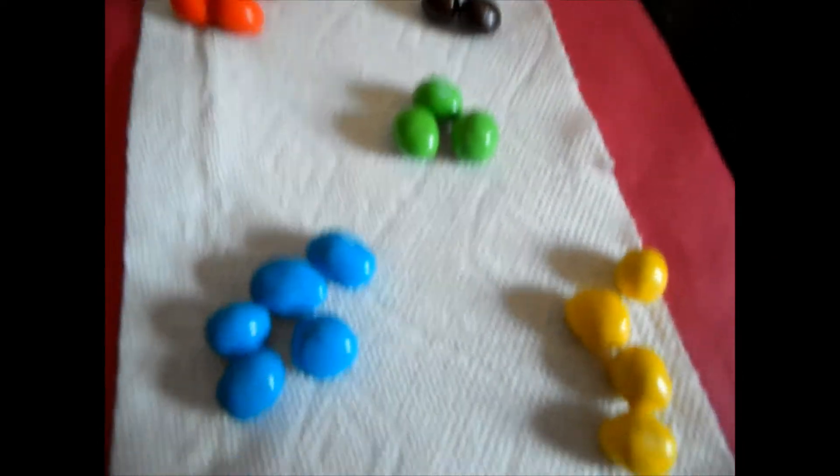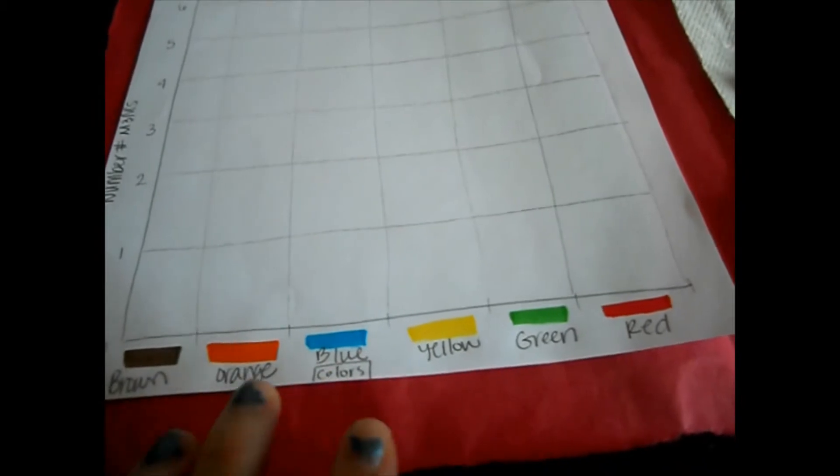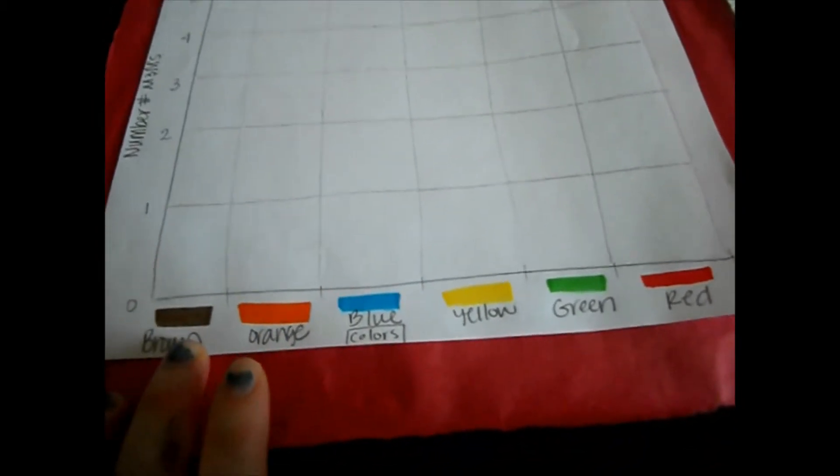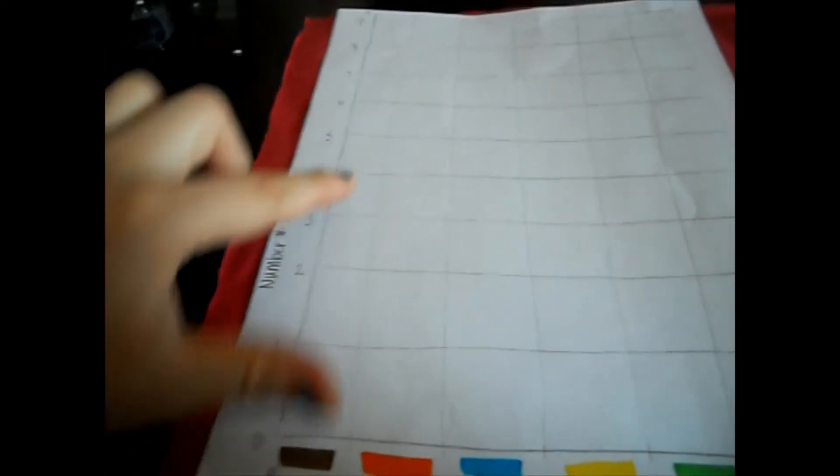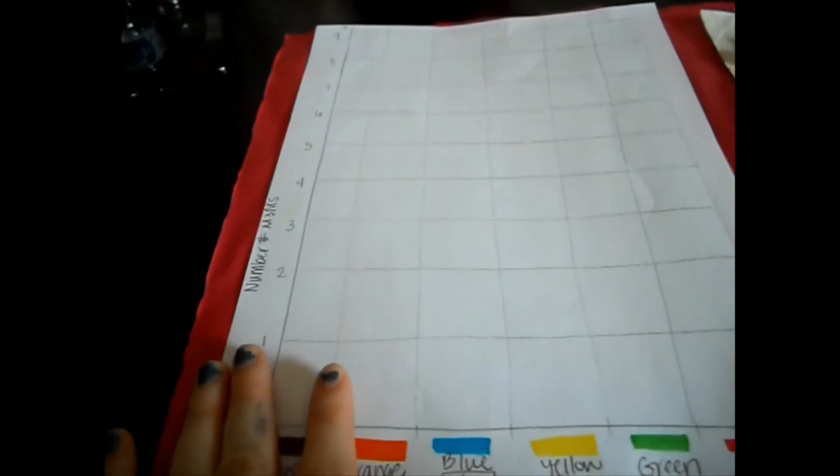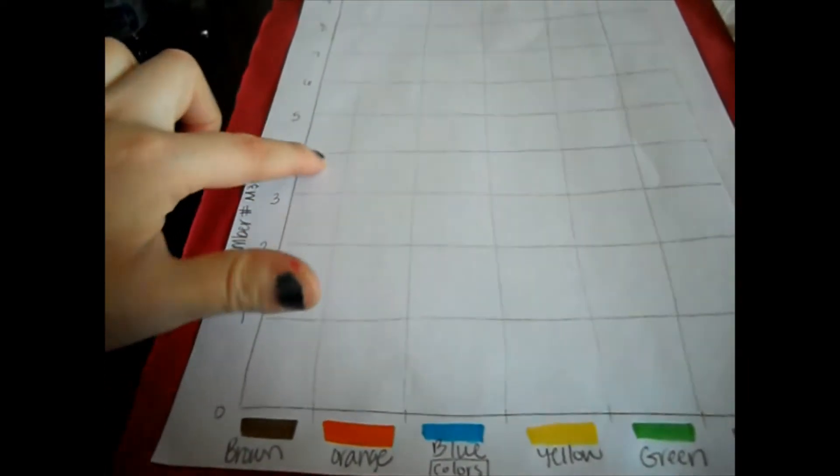Now, when it comes to graphing or charting, we are going to look at the graph. Bottom has the colors. So we have red, green, yellow, blue, orange, and brown. And this side is a number of M&Ms. And depending on what number of M&Ms we have, that's where we're going to color up to.